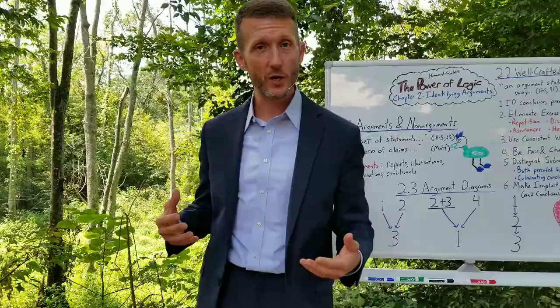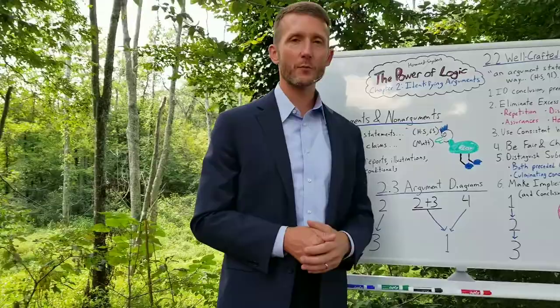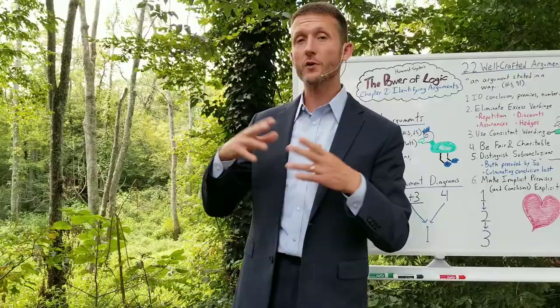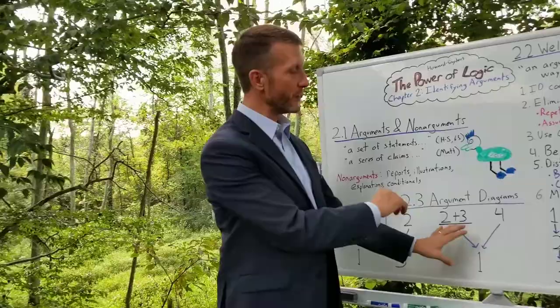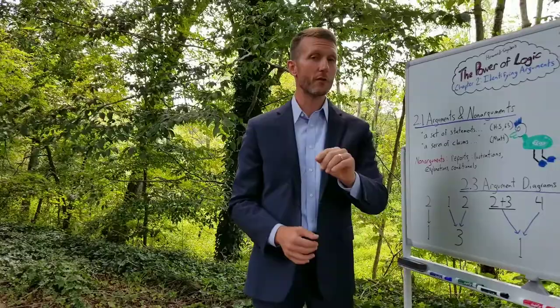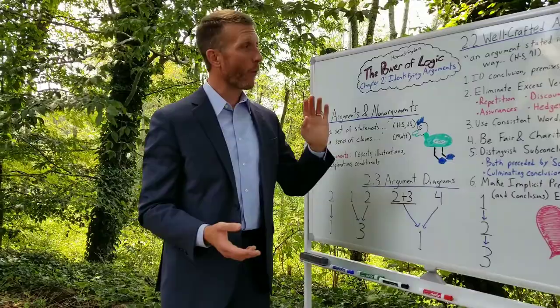Howard Snyder provides six steps. The first is to identify the conclusion and the premises, and to number and order them. Figure out which claim is the conclusion — which claim the rest of the premises are logically supporting. Write that at the very bottom, preceded by the word 'so.' Then above that, write out the premises that logically support that conclusion and number them.